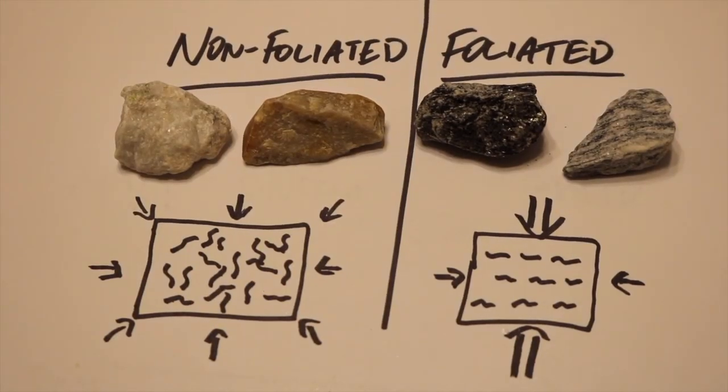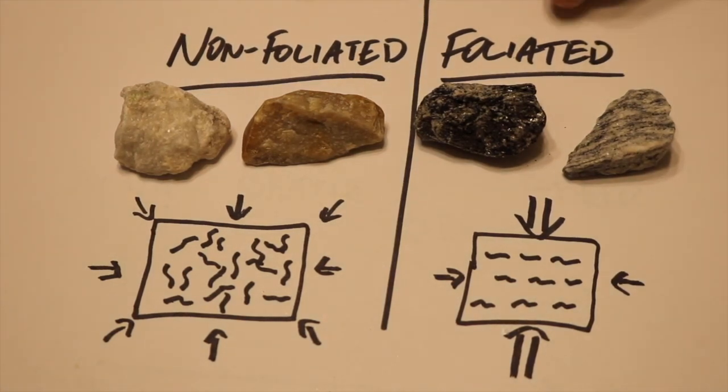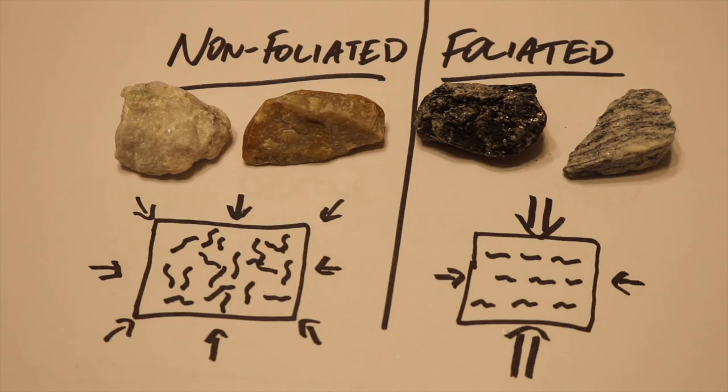So, these are really good examples of non-foliated and foliated rocks. As you are identifying your sample, it is first really important to first discern whether or not your sample is non-foliated or foliated. And just from that information itself, you can begin to narrow it down.